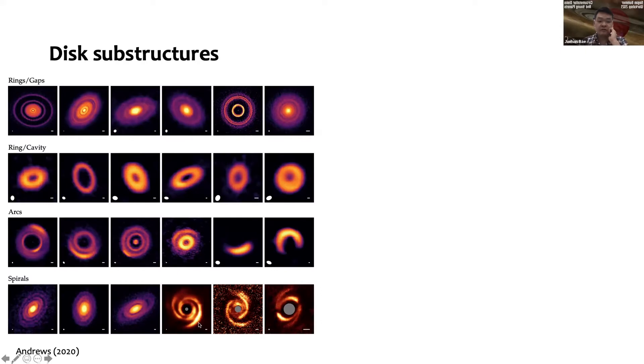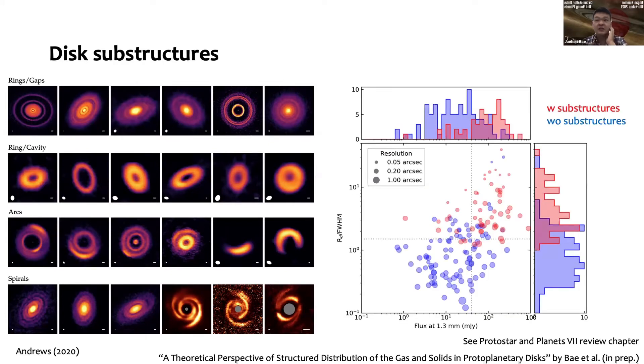This is great—we see diverse substructures. One thing I'd like to highlight from the observational side is that we are still looking at low-hanging fruits. This plot shows on the x-axis the flux at 1.3 millimeter in logarithmic scale—brighter disks on the right, fainter on the left. The y-axis is disk size measured in continuum divided by the beam size, so you can think of this as a resolution element.